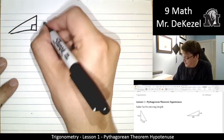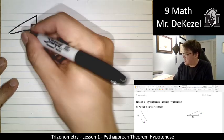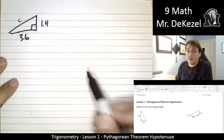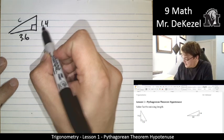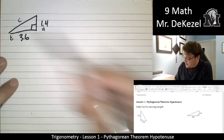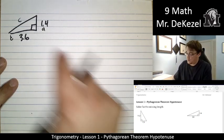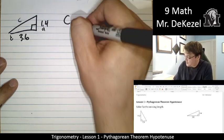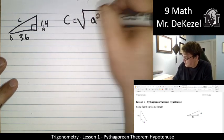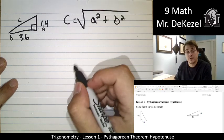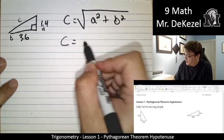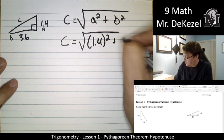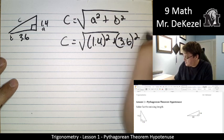We have our right angle, 1.4 for this side and 3.6 for this side. We're going to go ahead and label C, and then either one, this can be A and this can be B. So our equation, when we're trying to find out what C is, is C is equal to the square root of A squared plus B squared. C is equal to 1.4 squared plus 3.6 squared.